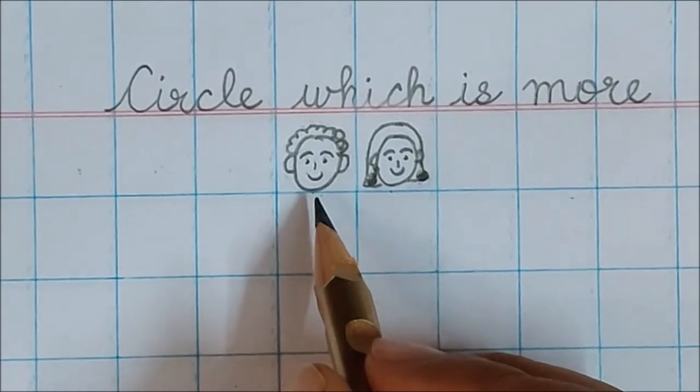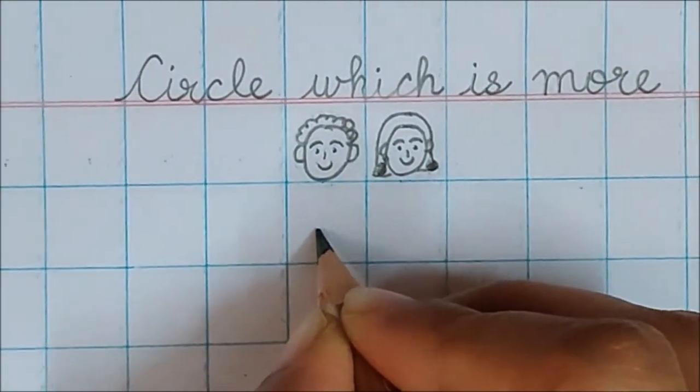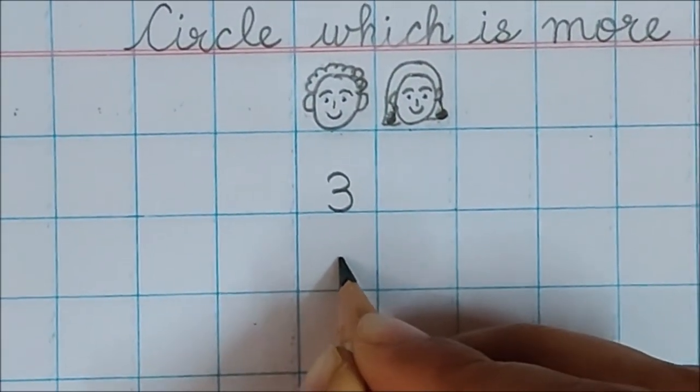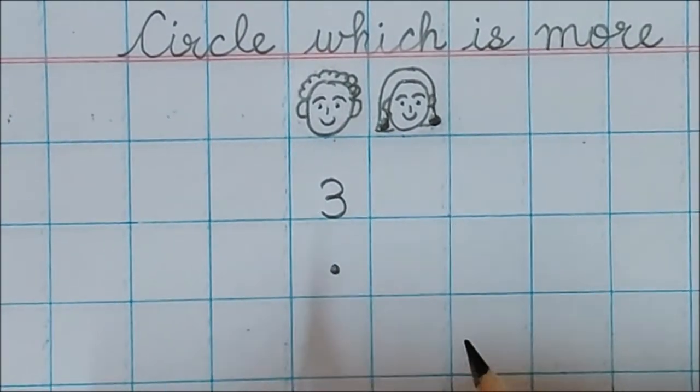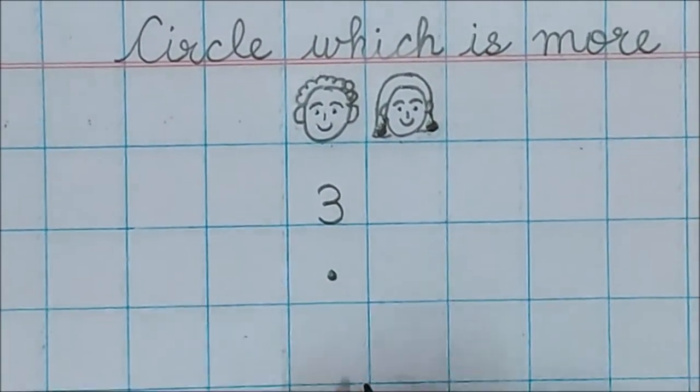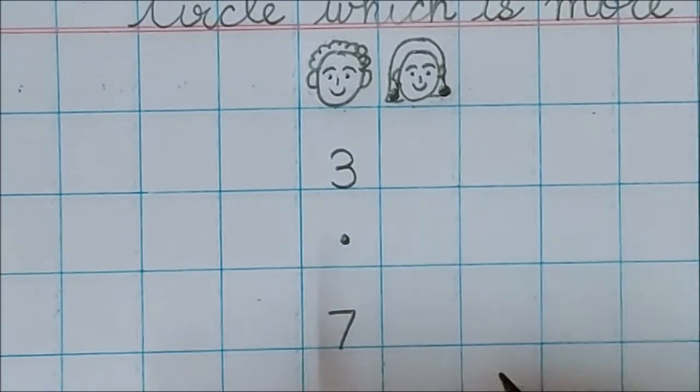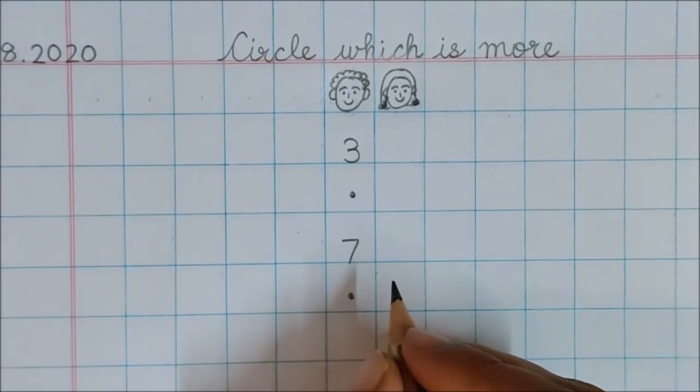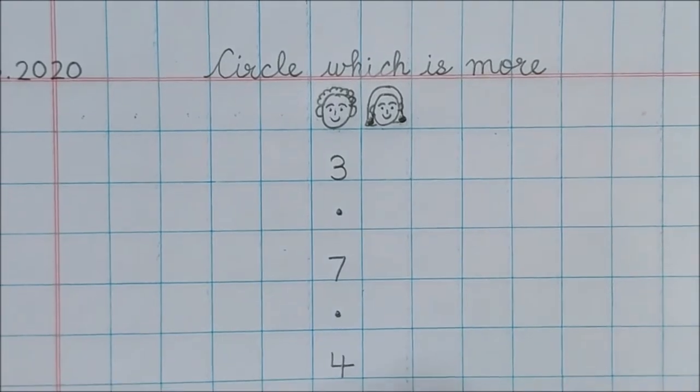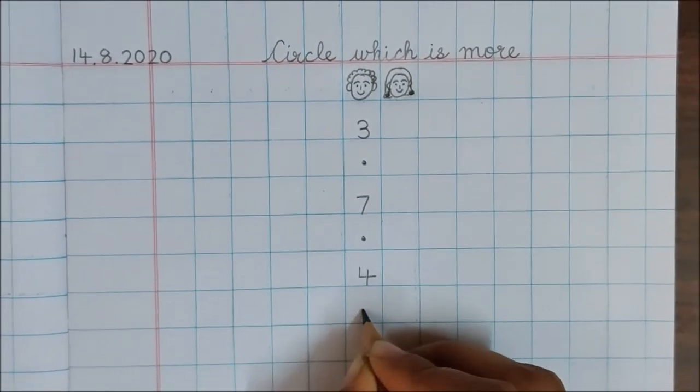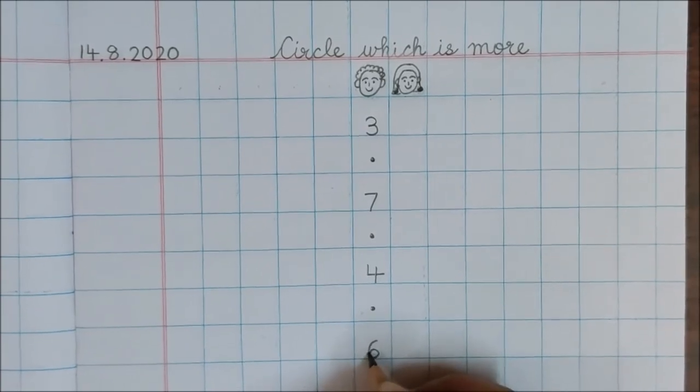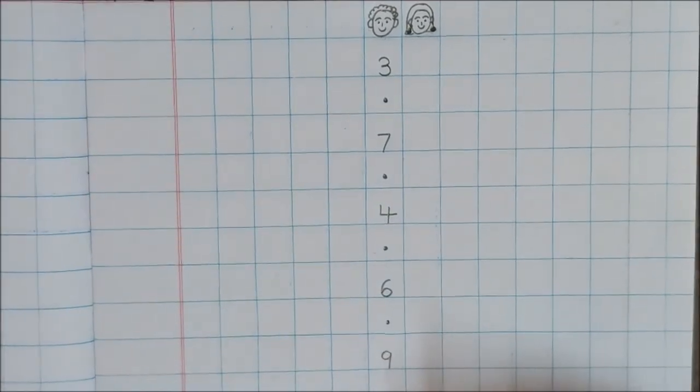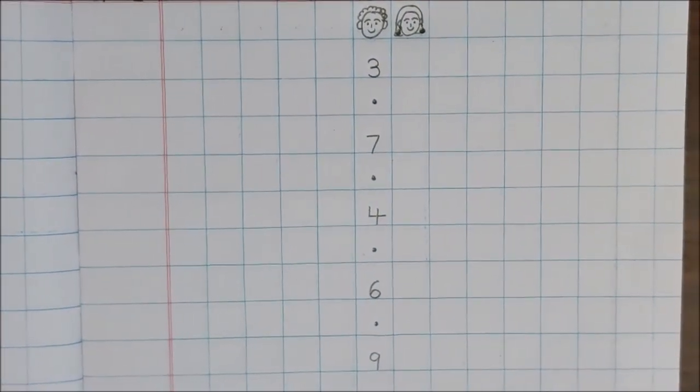Now children, below papa's drawing, write number 3. Now below 3, put a dot in this box. Done. Now below the dot, write 7. Again below 7, put a dot, below dot, write down 4, dot, 6, dot, 9. Have you written children? Yes.